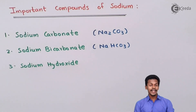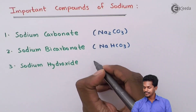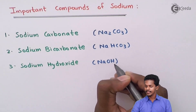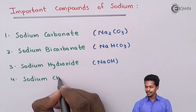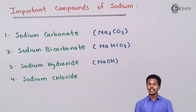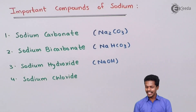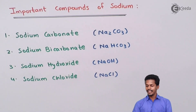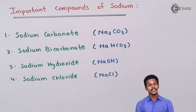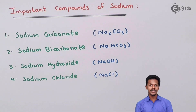The third compound is sodium hydroxide, which we call caustic soda, with the molecular formula NaOH. The fourth is sodium chloride, known as common salt, with the formula NaCl. These are the important compounds of sodium that we are going to discuss, and let us understand the preparation of each of these compounds.